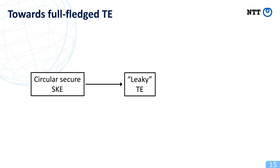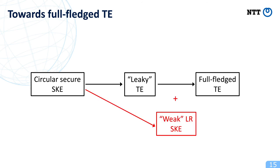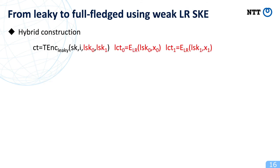Summarizing the discussion so far, we can see that we can transform circular-secure SKE into leaky targeted encryption. In order to achieve our final goal, we propose a transformation from leaky targeted encryption into full-fledged targeted encryption. Concretely, we propose a transformation using weak leaky-resilient SKE, which is implied by circular-secure SKE. Finally, I will briefly describe this transformation and explain that the needed leakage-resilient SKE is in fact implied by circular-secure SKE.